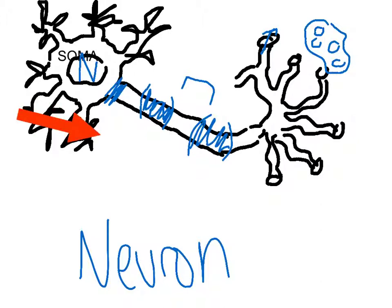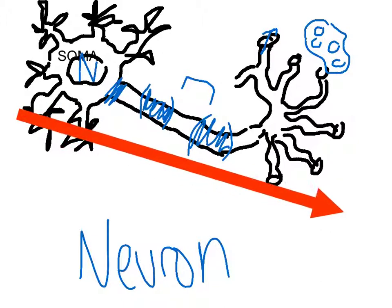This is our basic neuron, and this is the basic path of neurotransmitters through the neuron. And yeah, those are its parts.